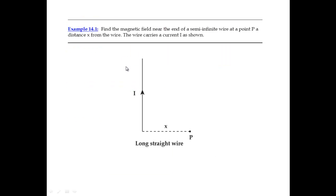Now I'd like to move on to a simple example, then a more complicated one. This first example comes right out of the textbook: find the magnetic field near the end of a semi-infinite wire at a point P, a distance X from the wire carrying current I. A semi-infinite wire has one end right at the tip of the arrow and then goes off to infinity in the upward direction — it has an end, but the other end goes off to infinity. I'll move over to my sketch pad to show how to use the Biot-Savart Law results to get the answer.